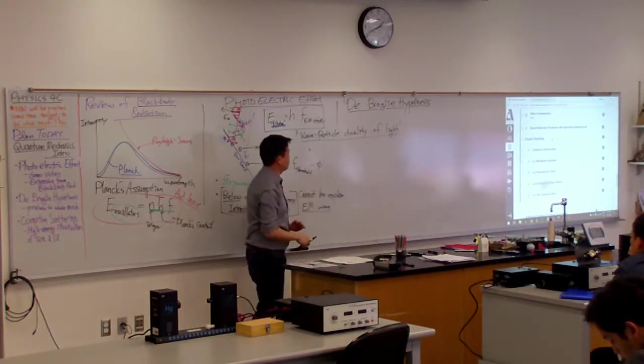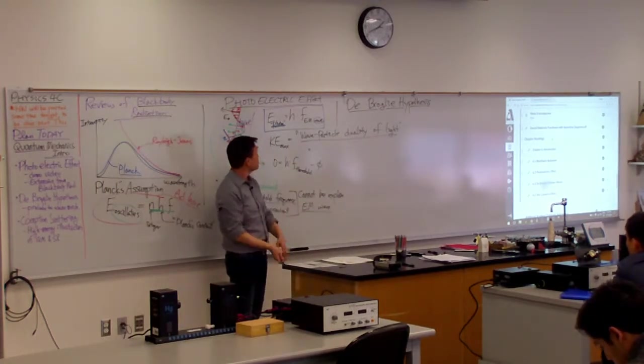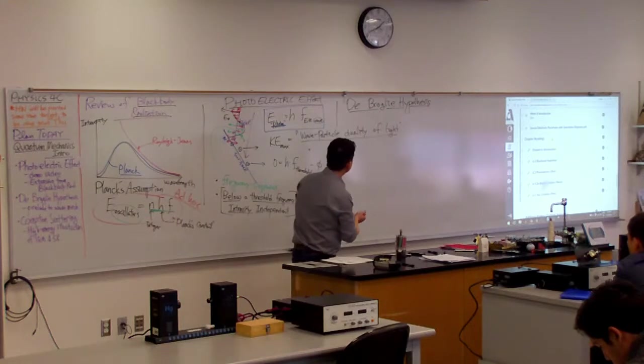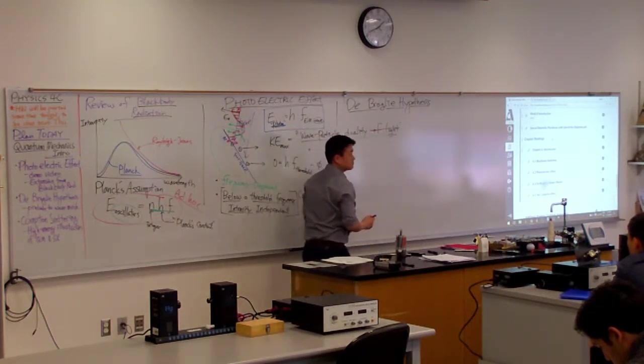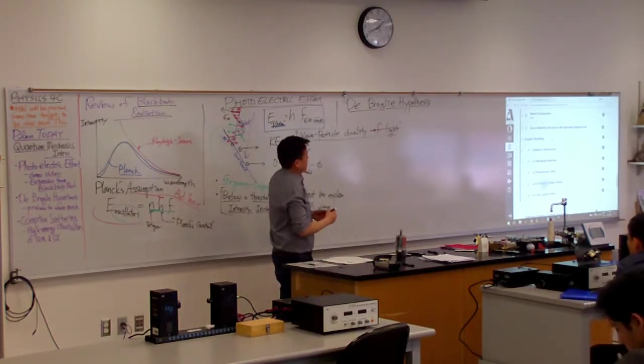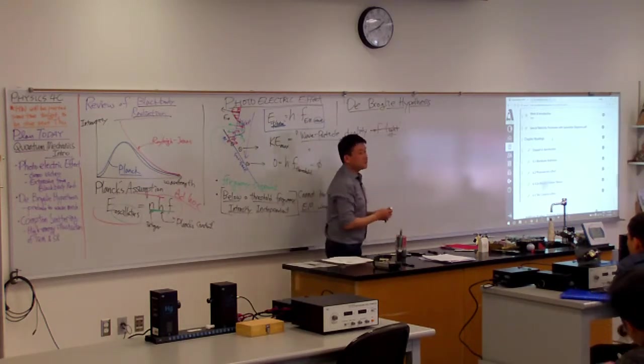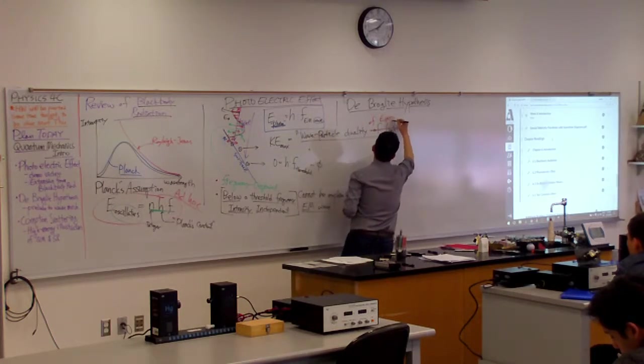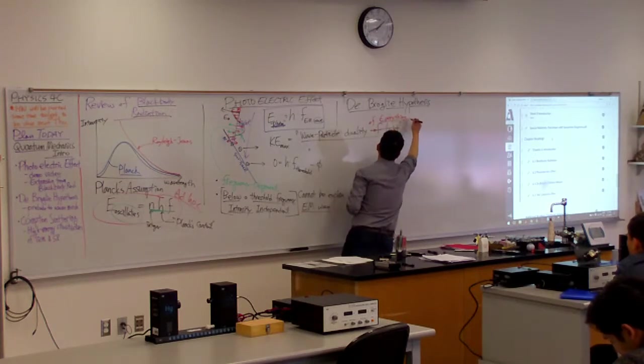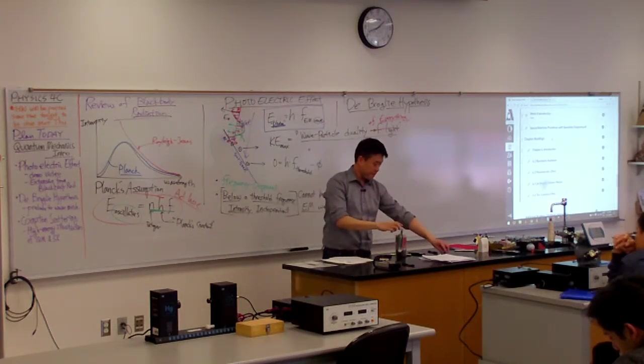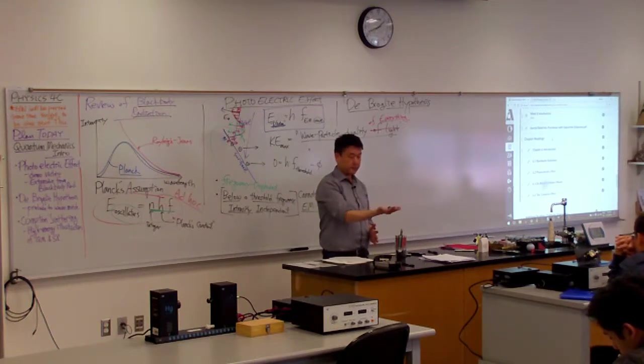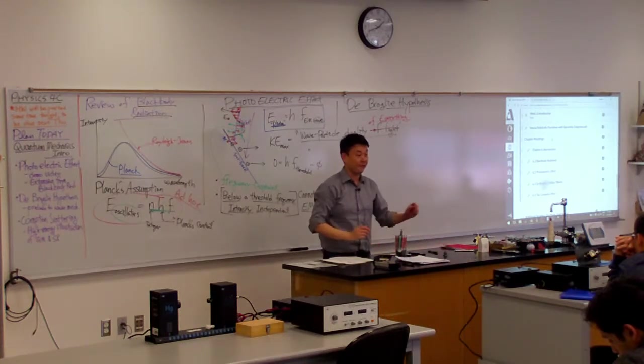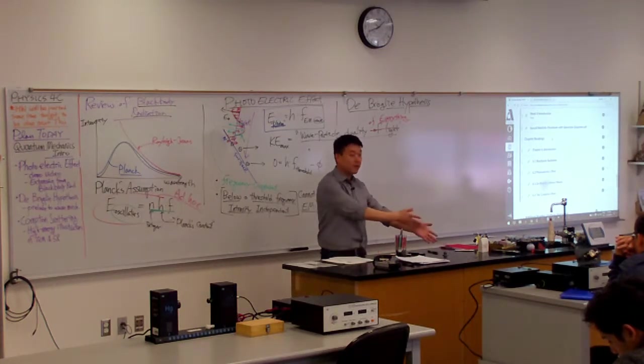And De Broglie, this is the very abbreviated version. He looked at it and thought Einstein didn't go far enough. In fact, he didn't have to say of light. He made this assumption, hypothesis, that this wave particle duality exists with everything. For example, if you have this, I was asking, what is the wavelength of this? De Broglie would say that yes, this does have wavelength. And we can actually assign a wavelength to it.